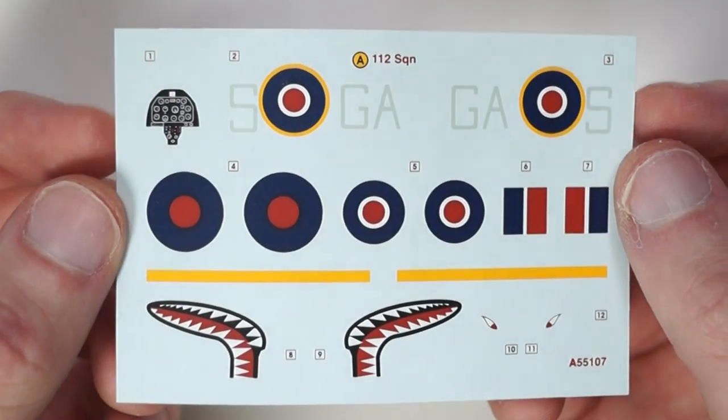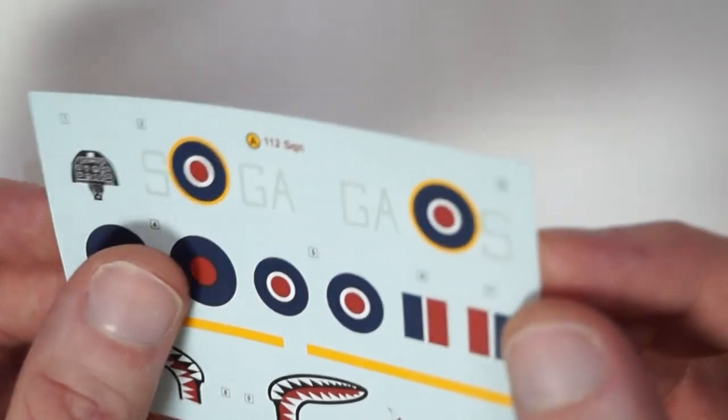And lastly the decals. They're by Cartograph and they're looking crisp. The register on them is good. They're not thick, slightly shiny, got a satin look to them. That's the decals, you only get one option.